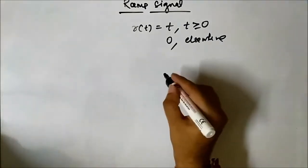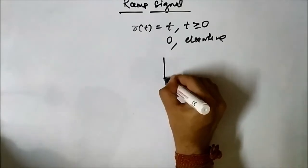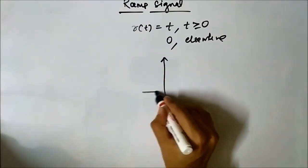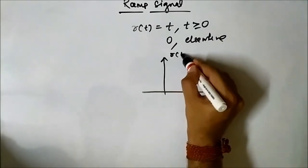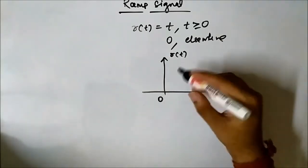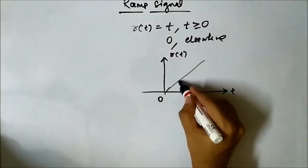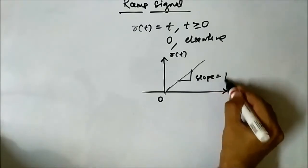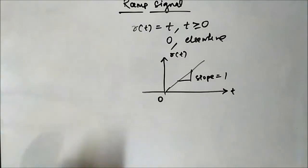The ramp signal is R(t) equals t for t greater than or equal to 0, and 0 elsewhere. This is the ramp signal with slope equal to 1. Now let us perform the shifting operation.